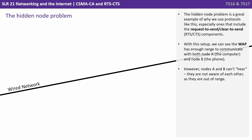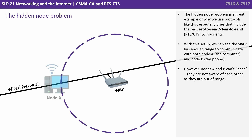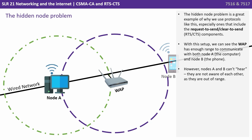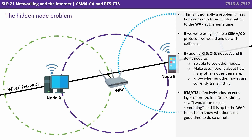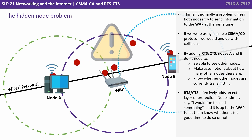Let's discuss what we call the hidden node problem. The hidden node problem is a great example of why we use protocols like this, especially ones that include the Request to Send and Clear to Send components. With this setup, we can see the wireless access point has enough range to communicate with both node A (the computer) and node B (the phone). However, nodes A and B can't hear each other — they're not aware of each other as they're out of range. This isn't normally a problem unless both nodes try to send information to the wireless access point at the same time.